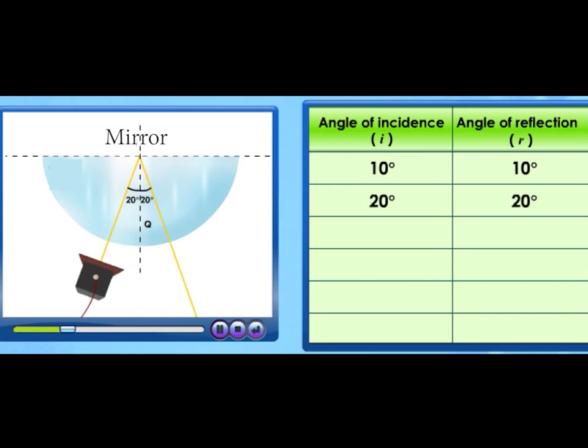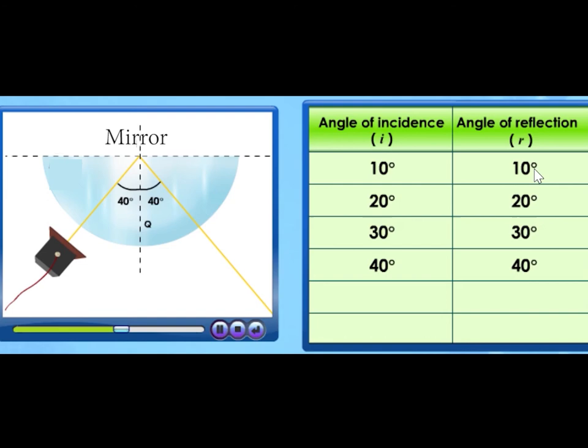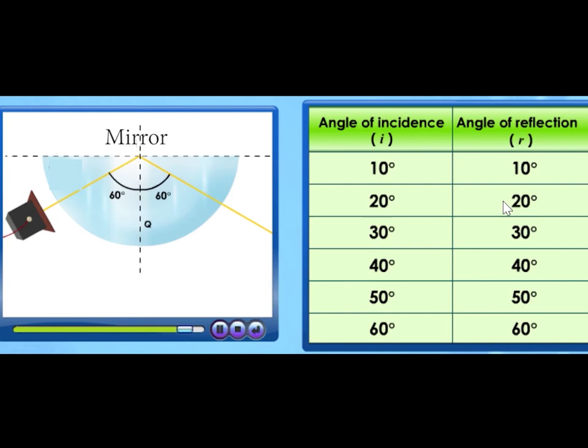When the angle of incidence is 10 degrees, the angle of reflection also is 10 degrees. When the angle of incidence is 20 degrees, the angle of reflection is also 20 degrees. What can you deduce from this observation?